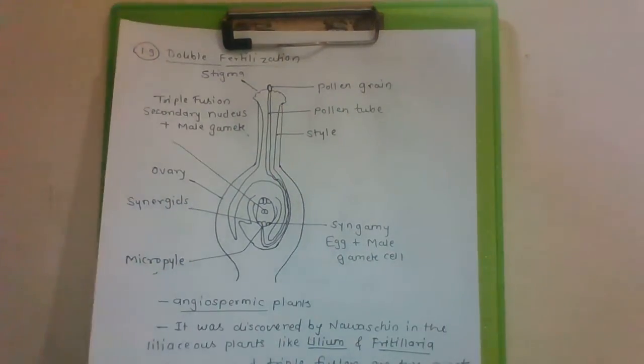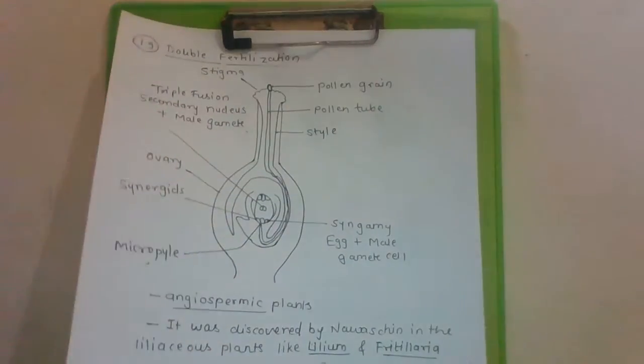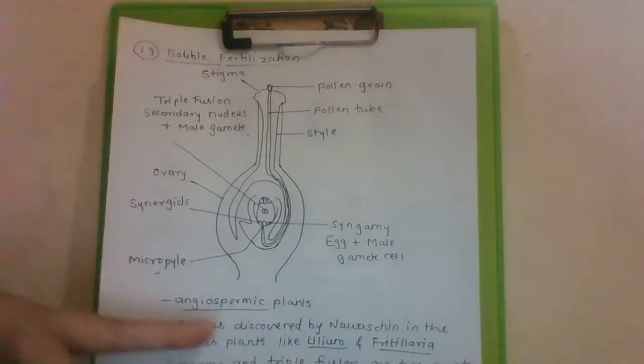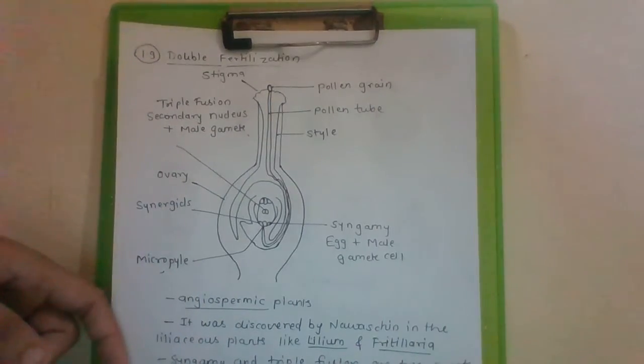Hello students, today we are going to discuss double fertilization. Double fertilization occurs in angiospermic plants, means flowering plants.